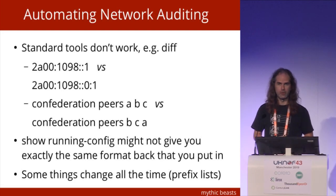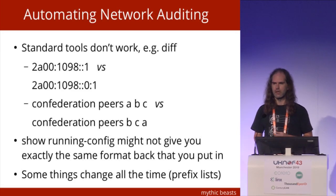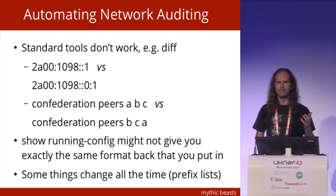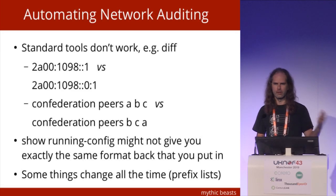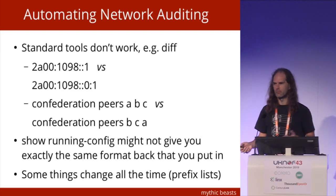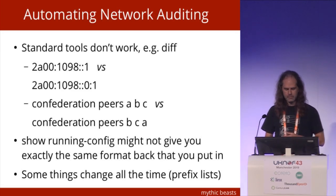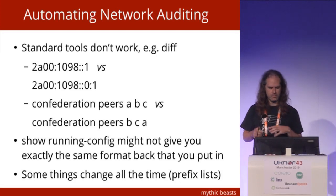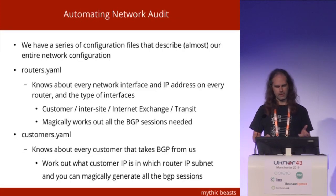You also have the problem that some things change continuously. If you prefix filter other networks, which you should, the problem is that for some of your bigger peers, you may discover that their prefix filter changes about every 90 seconds. Therefore, the running config in your router is obviously different to the one you've just generated, because a change has happened. For our network, we've got configuration files that pretty much describe most of how the network is put together.